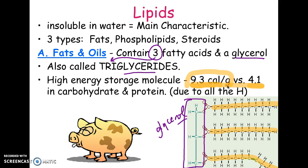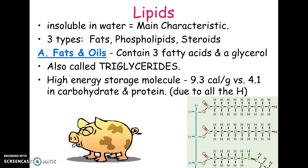If you notice in this picture, the third fatty acid is bent at the bottom. That's because a double bond was added, which causes it to bend — a kink in the fatty acid chain. We'll talk about that on the next slide, but there's a reason for that double bond.